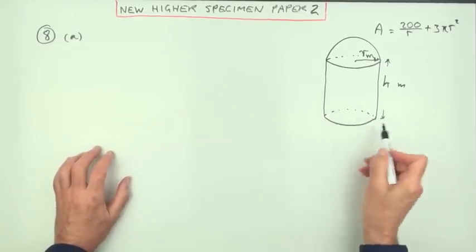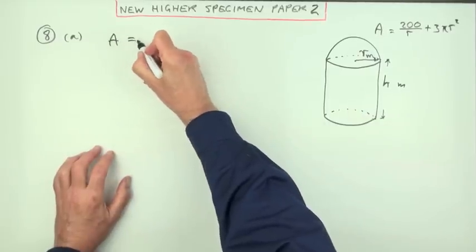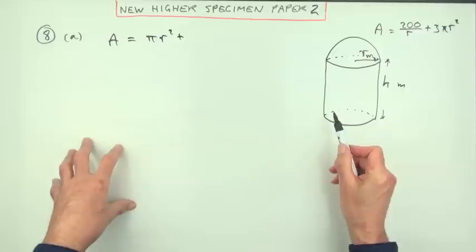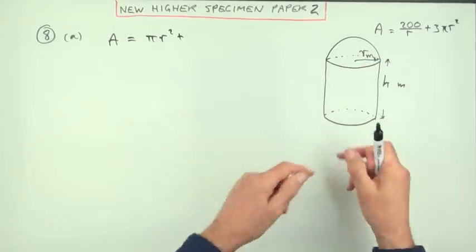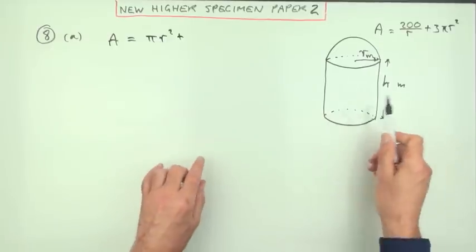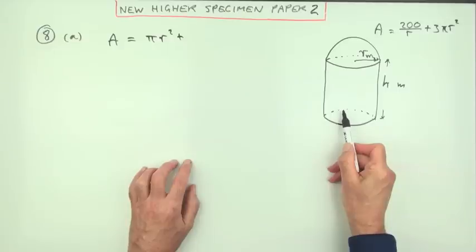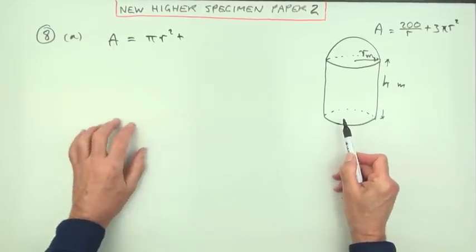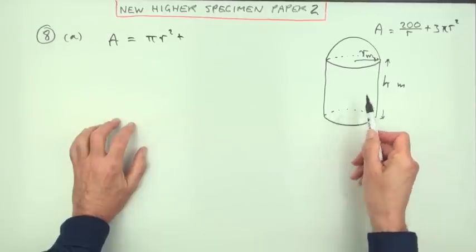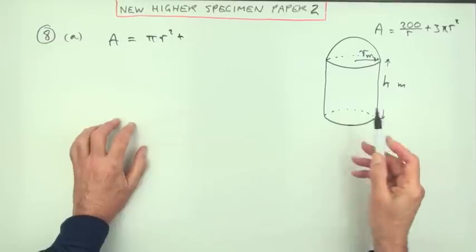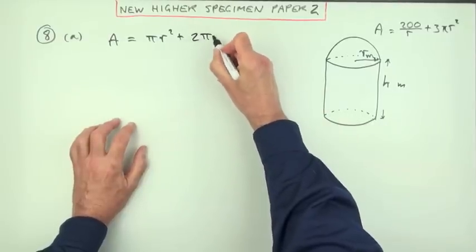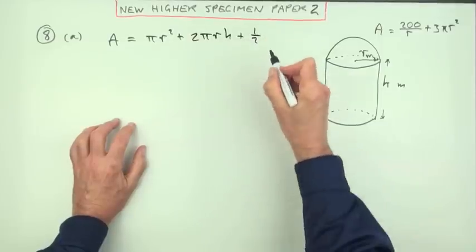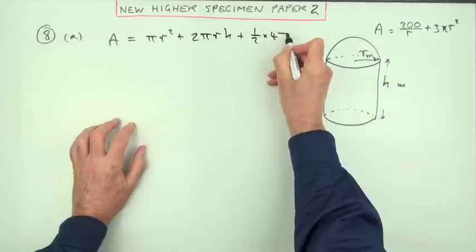So what is the area of this? We've got a flat circular base, so that'll just be pi R squared. Then you have the curved sides of the cylinder, which would open out into a flat rectangle whose dimensions would be the circumference times the height. That's 2 pi R H for the curved side. And the top's a hemisphere, so its area will be half of 4 pi R squared.